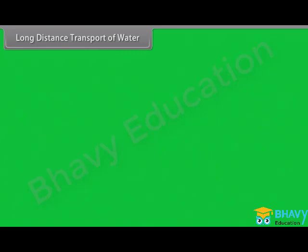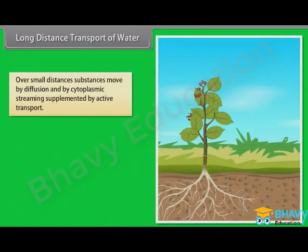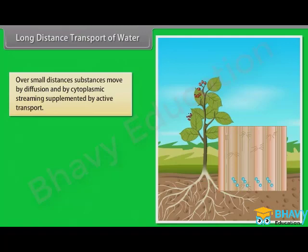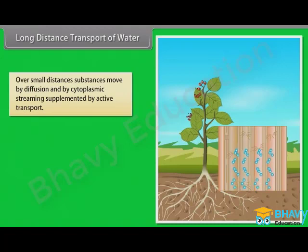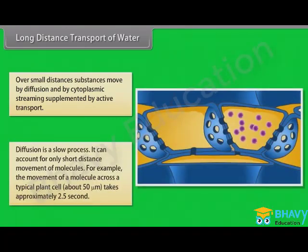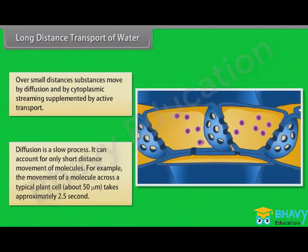As we all know, over small distances, substances move by diffusion and by cytoplasmic streaming, supplemented by active transport. Long distance transport of substances within a plant cannot be by diffusion alone. Diffusion is a slow process — it can account for only short distance movement of molecules. For example, the movement of a molecule across a typical plant cell takes approximately 2.5 seconds.